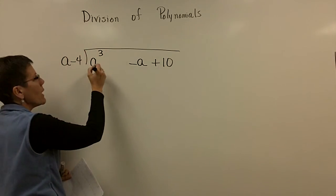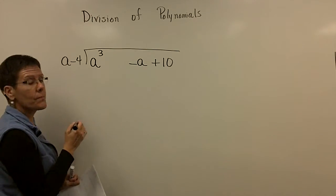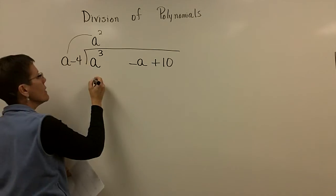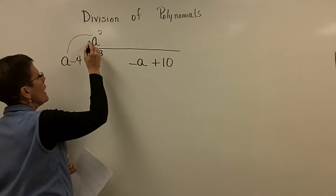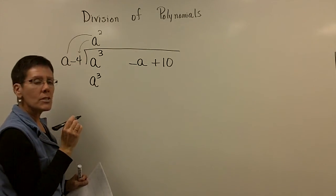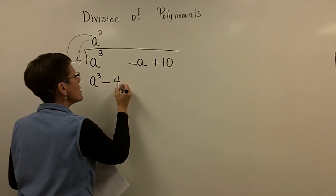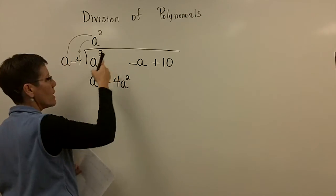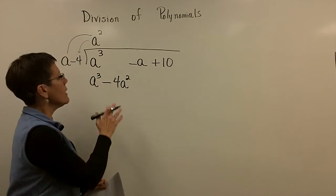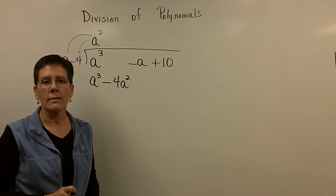So let's just start the process. What times a gives you a cubed? A squared times a gives you a cubed. And a squared times a minus 4 is a minus 4 a squared. If I had had this a written right there, I might be attempting to add a negative a and a negative 4 a squared together. Or when I change my signs. You're not allowed to do that.